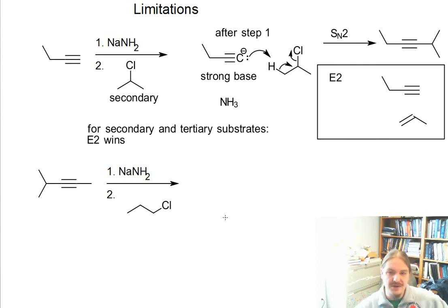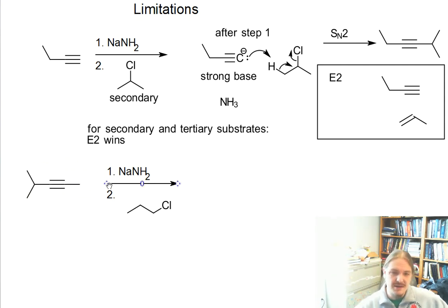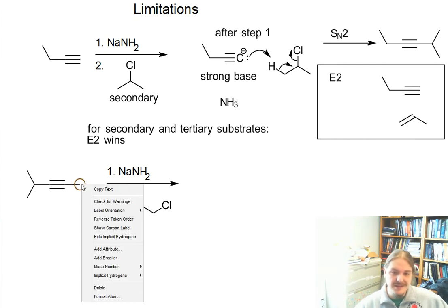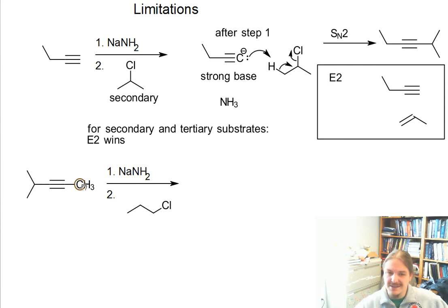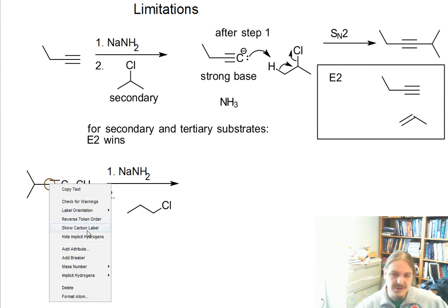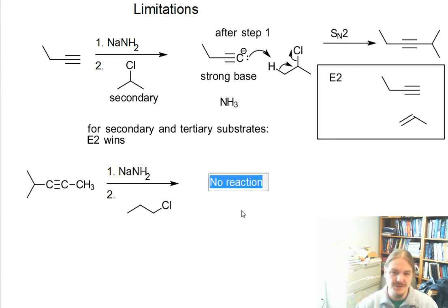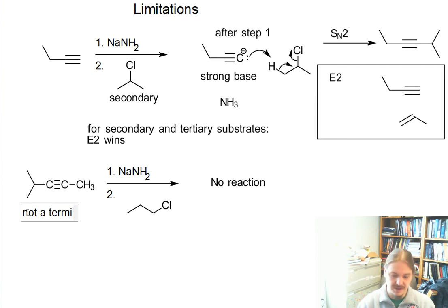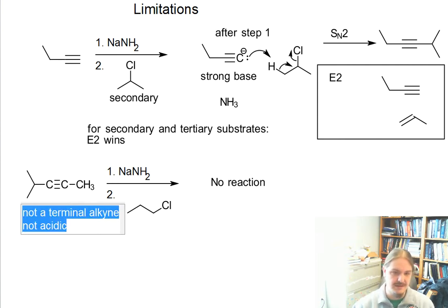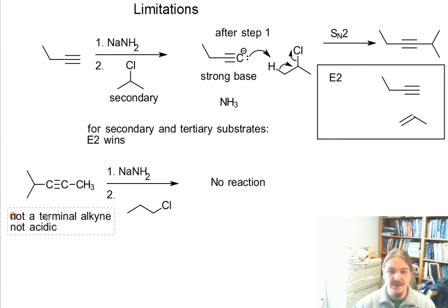The second limitation is non-terminal alkynes, or internal alkynes. You might trick yourself into thinking a particular alkyne is terminal, but if there's a methyl group on the end and the alkyne is internal with no hydrogen atoms on it, that's actually not a terminal alkyne. This combination leads to no reaction, because the alkyne is not terminal, which means it's not acidic. This is another limitation: this reaction can only be used on terminal alkynes.